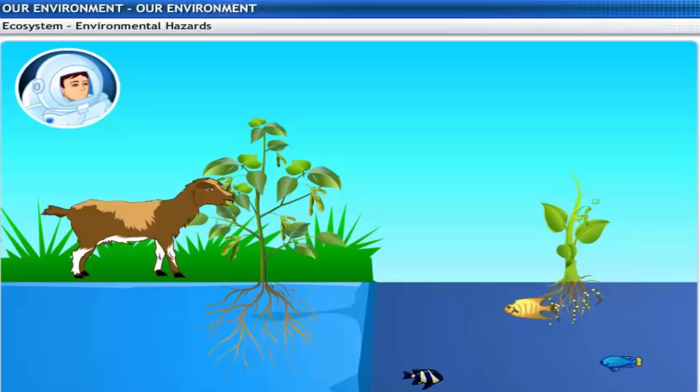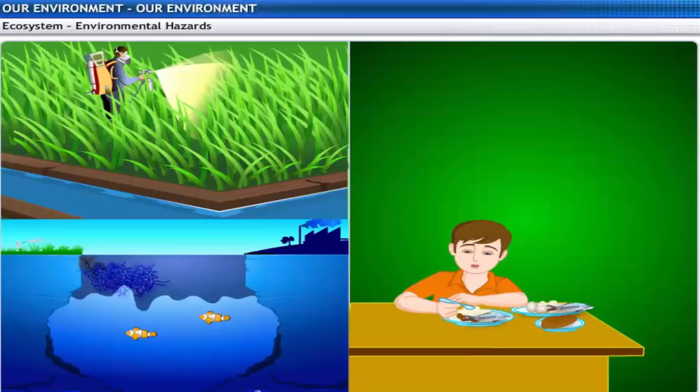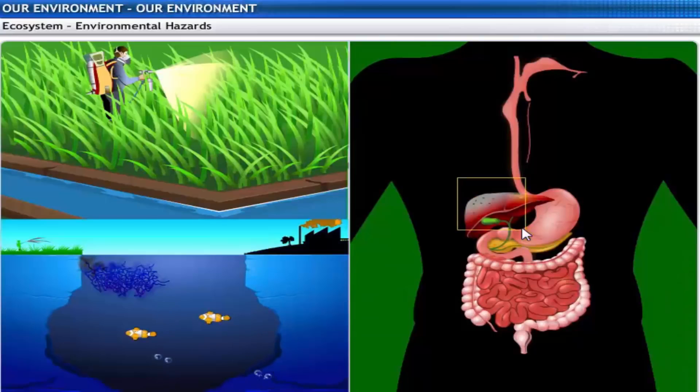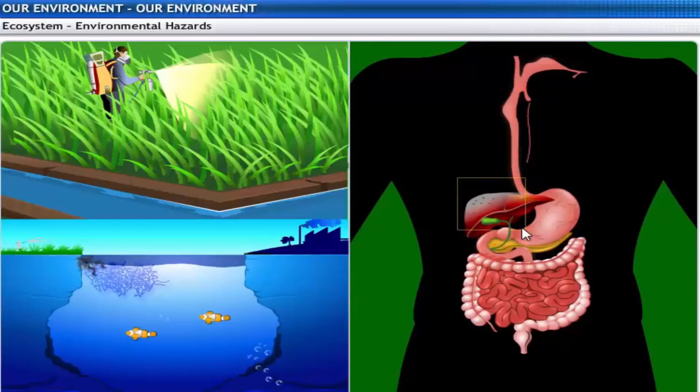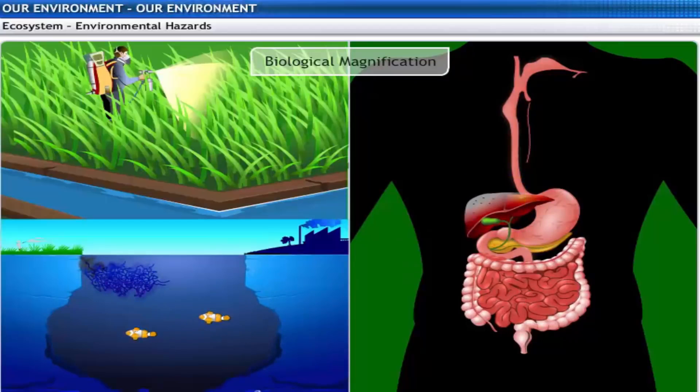Why isn't anything being done about it? As these chemicals are not degradable, these get accumulated progressively at each trophic level. As human beings occupy the top level in any food chain, the maximum concentration of these chemicals gets accumulated in your body. This phenomenon is known as biological magnification.